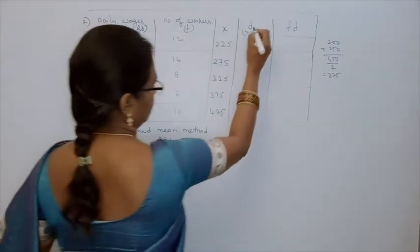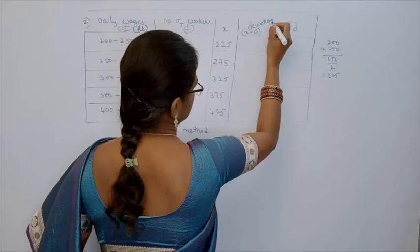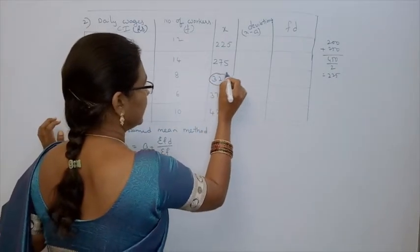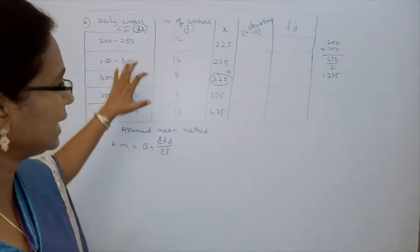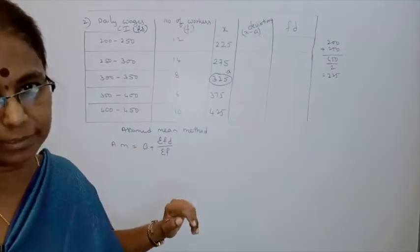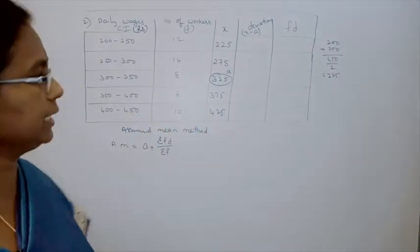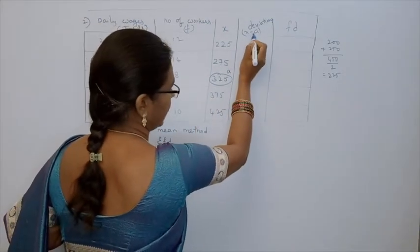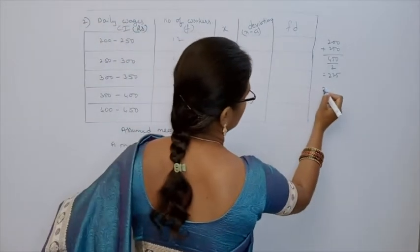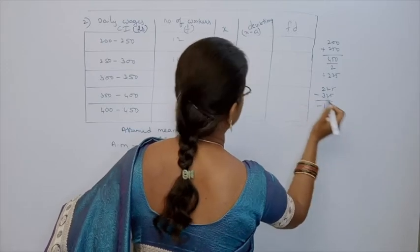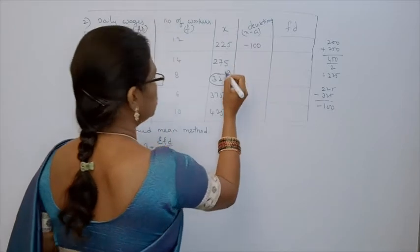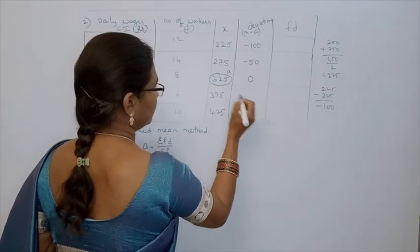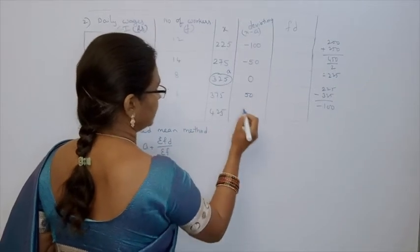Next, D means deviations. The formula for deviation is D = X − A. What is A? We have to assume it. Now, we take A = 325. Since there are 5 class intervals, we take the middle one as the assumed mean, which is 325. Now deviations: 225 − 325 = −100; 275 − 325 = −50; 325 − 325 = 0; 375 − 325 = +50; 425 − 325 = +100.